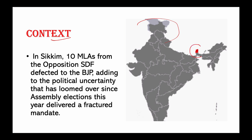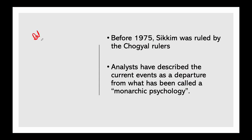Looking at a map of India, here is Sikkim. Recently, more than 10 MLAs have shifted sides from the opposition SDF and defected to BJP, adding to the political uncertainty that has loomed since assembly elections, which delivered a fractured mandate. This current instability follows a unique event — the voting out of a government in power for the first time in Sikkim's history since it joined India in 1975.